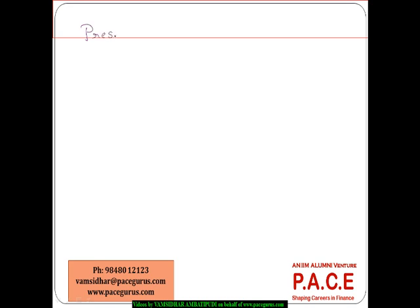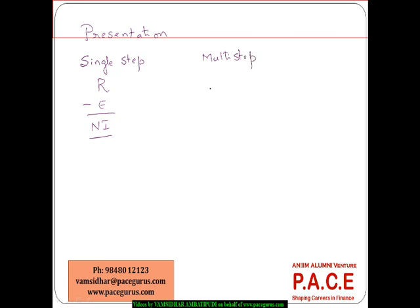Regarding presentation mechanisms for financial statements, we can have either a single-step presentation — where we simply group all revenues minus all expenses and directly arrive at the net income — or a multi-step process, where more detail is provided.